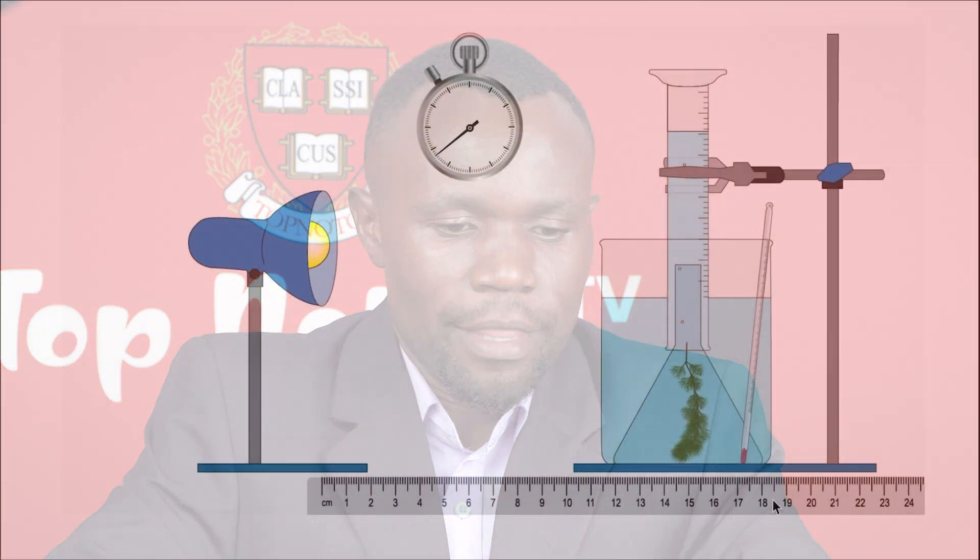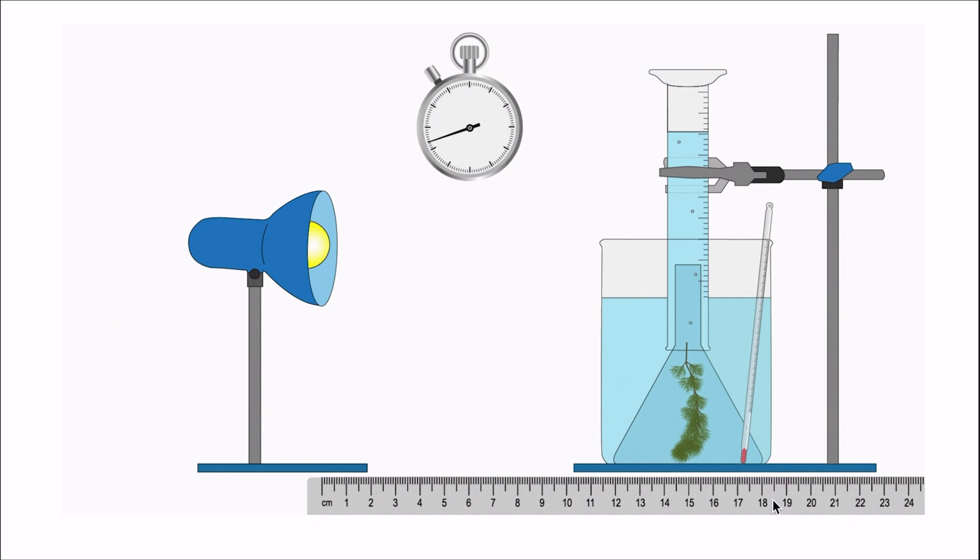In this simulation we have bubbles being produced. In the beaker we have the lamp being moved closer to the water bath. As the lamp is moved near to the water bath, the number of bubbles being produced increases.